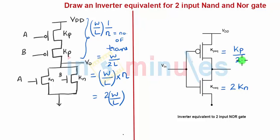2. So we have got KP equivalent and KN equivalent for a two-input NAND gate and a two-input NOR gate. Now with this equivalent, we'll go ahead and find some expressions for critical voltages. Hope you have followed. Stay tuned, thank you.